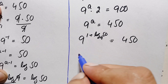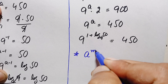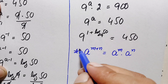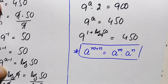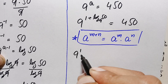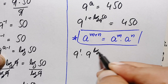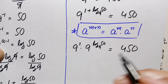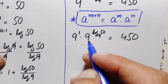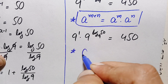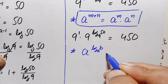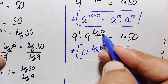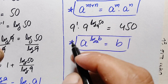We use the exponential identity: r^(m+n) = r^m times r^n. Applying this, the left hand side becomes 9^1 times 9^(log_9(50)). Now we apply the logarithm identity: a^(log_a(b)) = b. So 9^(log_9(50)) is replaced by simply 50.